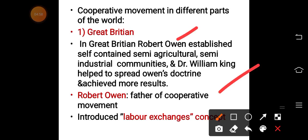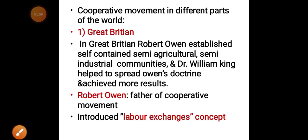Robert Owen's concept was that of self-contained, semi-agricultural and semi-industrial communities. Self-contained means they had everything within themselves and did not need support from outside — a complete self-contained, semi-agricultural and industrial community.